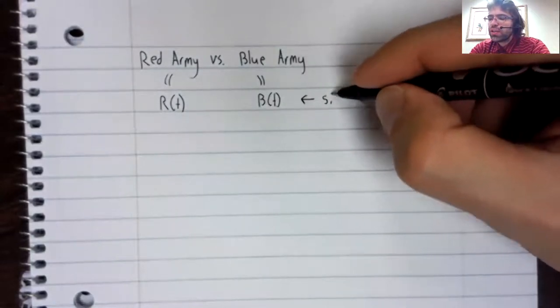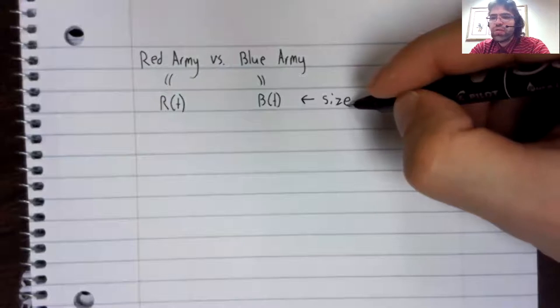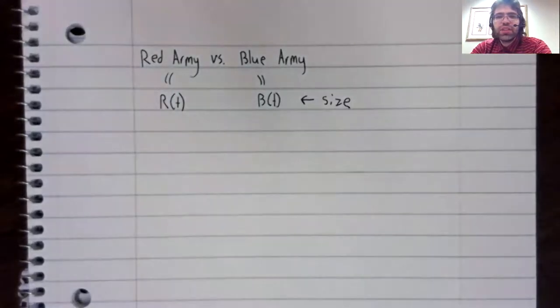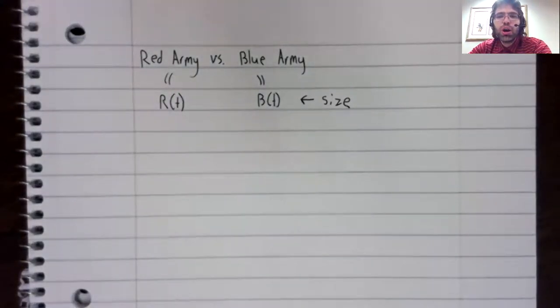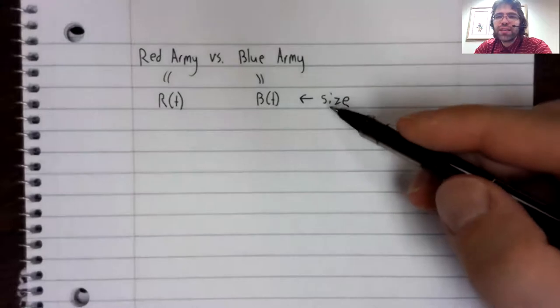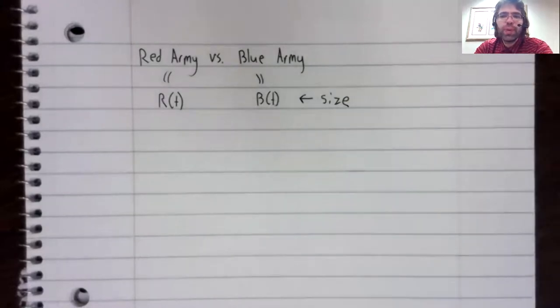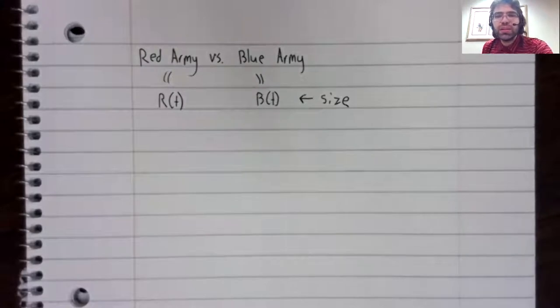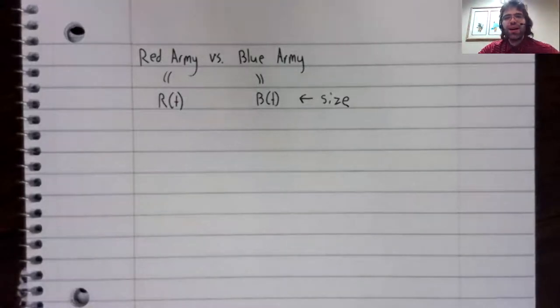More technically, R of T and B of T represent combat effectiveness, but we'll interpret that in a very simple way as the size of the armies. And we'll ask, how do the size of the armies change over time?